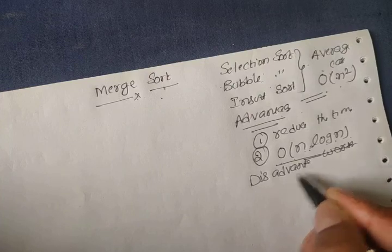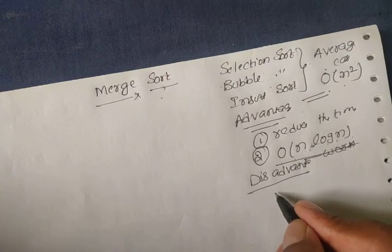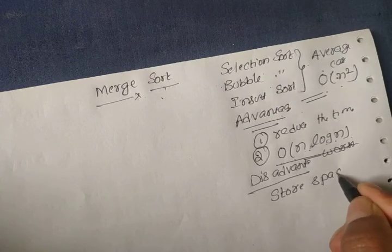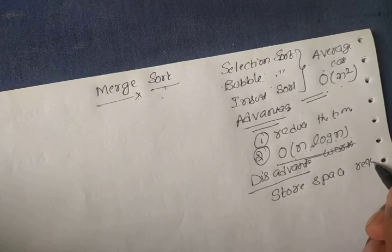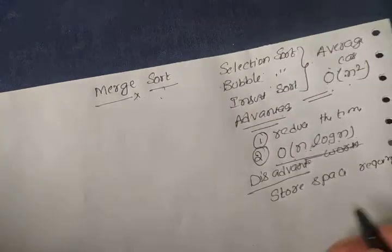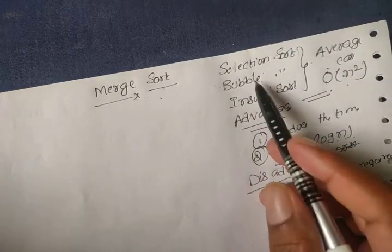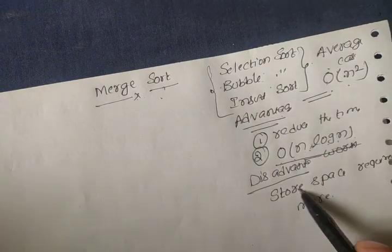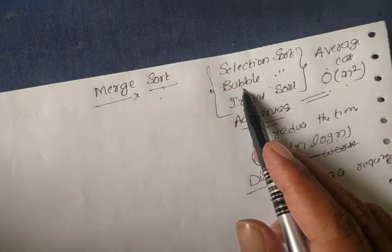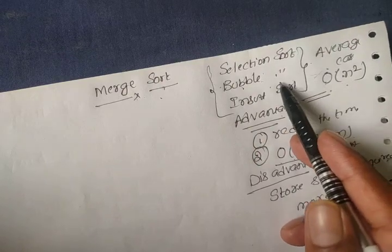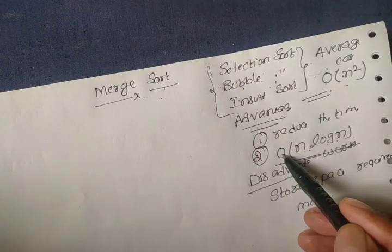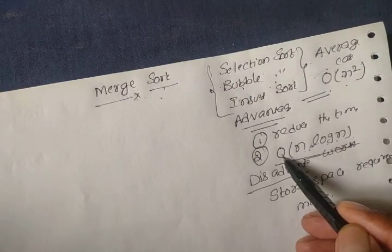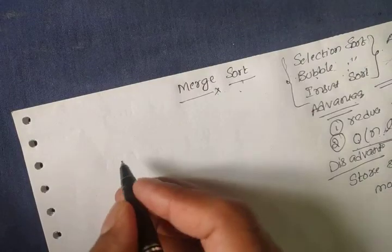Regarding the disadvantage of merge sort, it will require more store space compared to the previous three sorting techniques. The previous sorts take less space but more time, whereas merge sort takes more space but less time to complete.